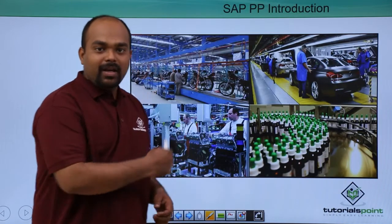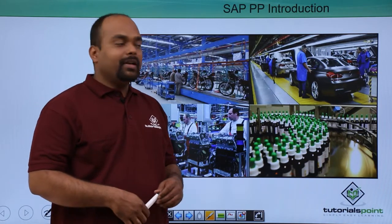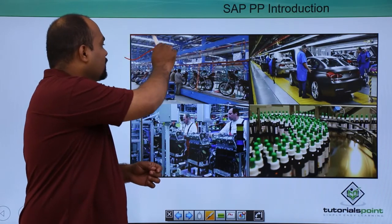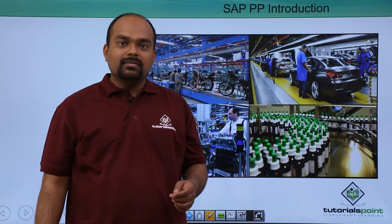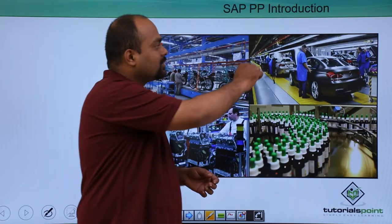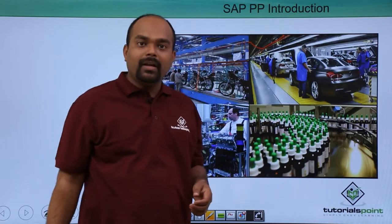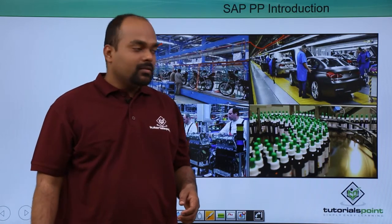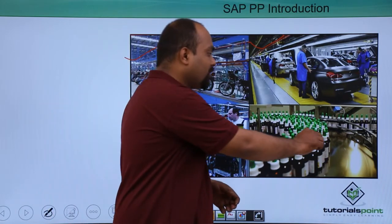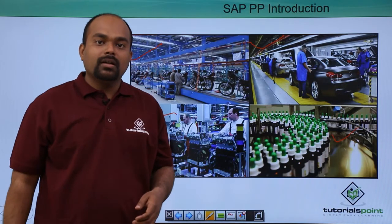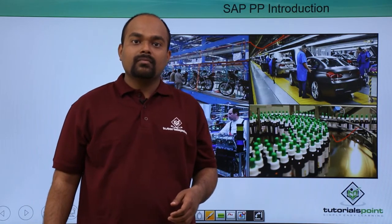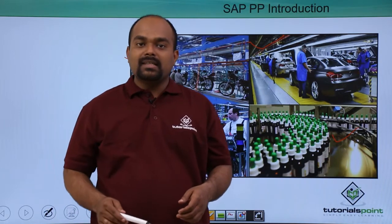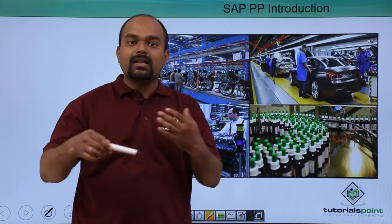If you see this image, here four different types of industries are shown: bike manufacturing, car manufacturing, engine assembly, and a pharmaceutical company manufacturing drugs. In these four different types of industries, different processes are going on.